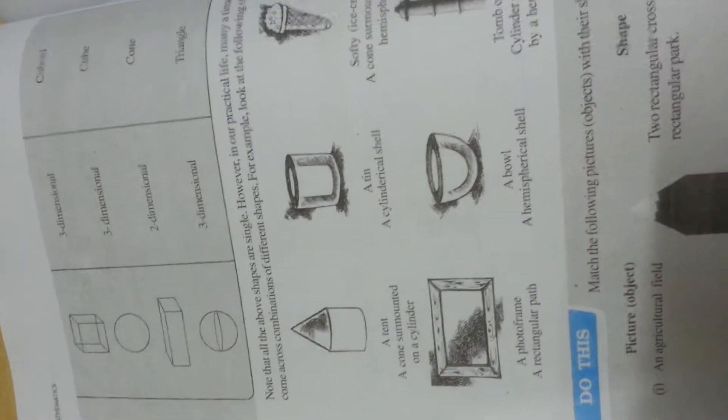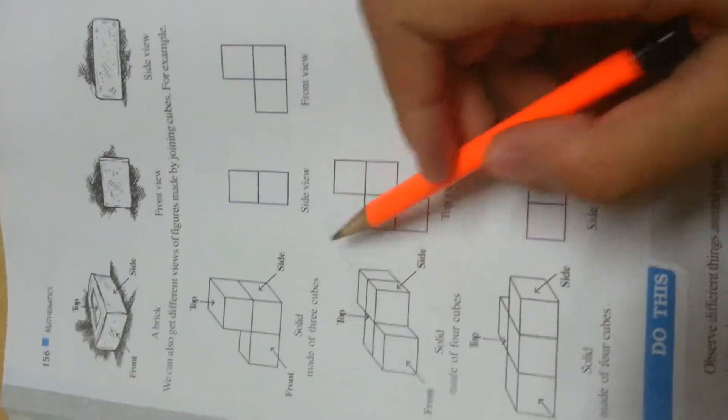First of all, what you need to know in this chapter is the number of faces, edges, and vertices occupied by various 3D shapes. These questions are important.